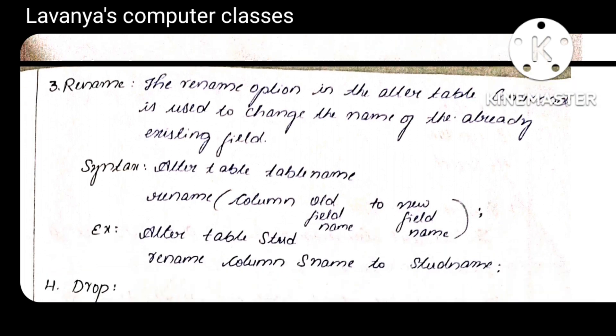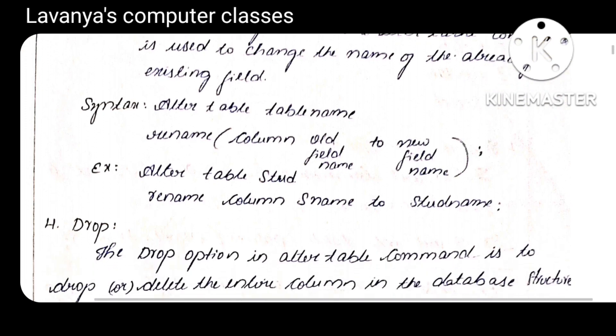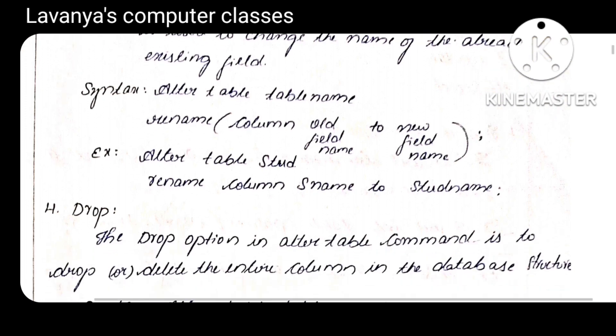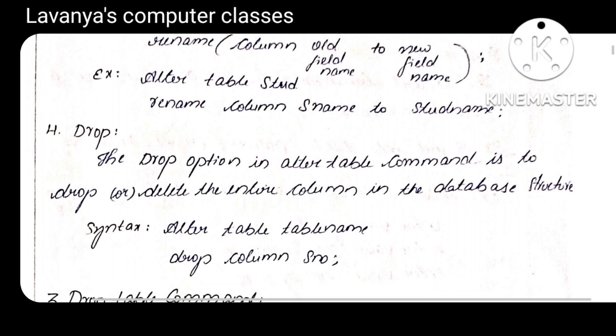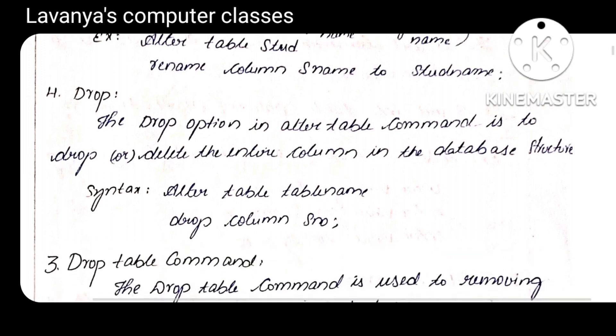RENAME is used for changing the field name — the old name to a new name. Syntax: ALTER TABLE table_name RENAME old_column_name TO new_column_name. The last option is DROP. This DROP option is used to remove a column from an already existing table in the database.